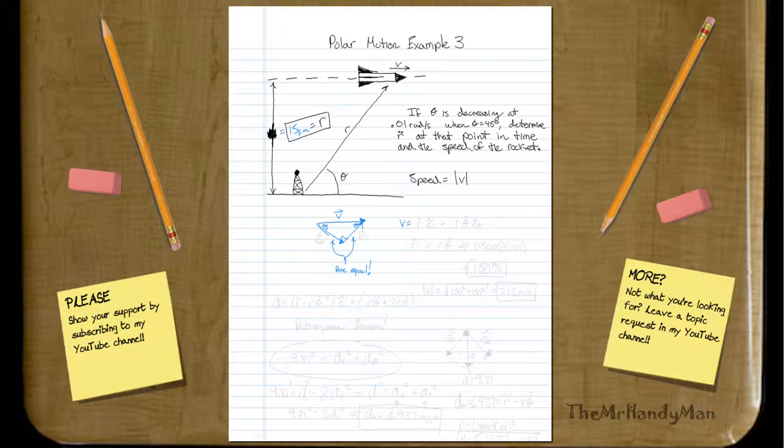You know that V in this form is going to be r dot e_r plus r theta dot e_theta. Now, this is a cylindrical equation, however, this is a 2D problem. I don't need to worry about phi. Just get used to the idea of having a fixed point, and then you can work your way from there.